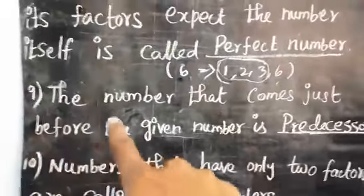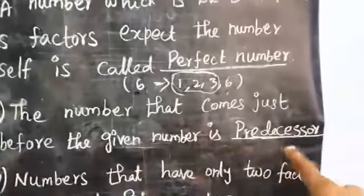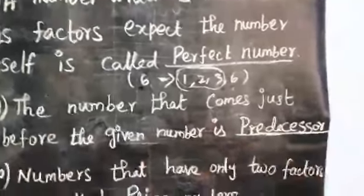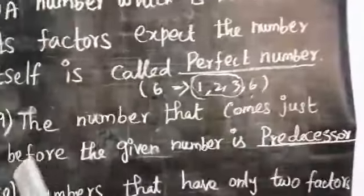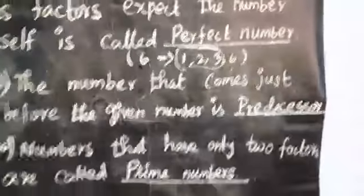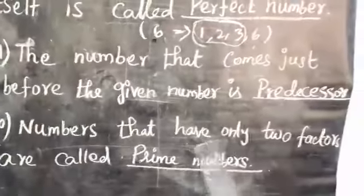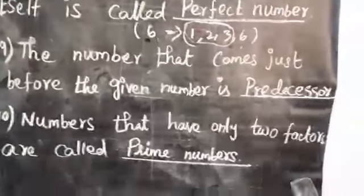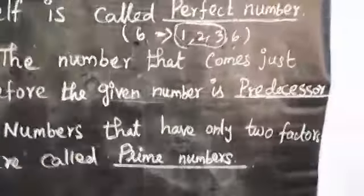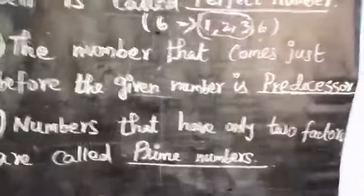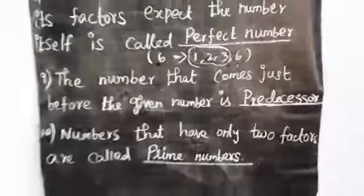Ninth one: the number that comes just before the given number is called the predecessor. Before means predecessor; after means successor. Tenth one: numbers that have only two factors — one and the number itself — are called prime numbers.